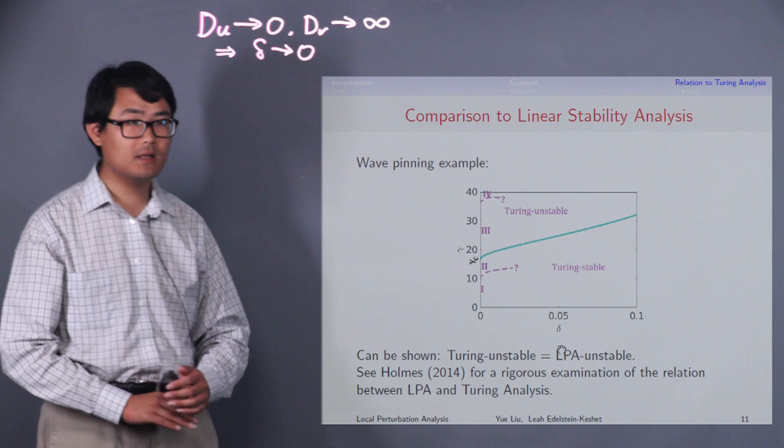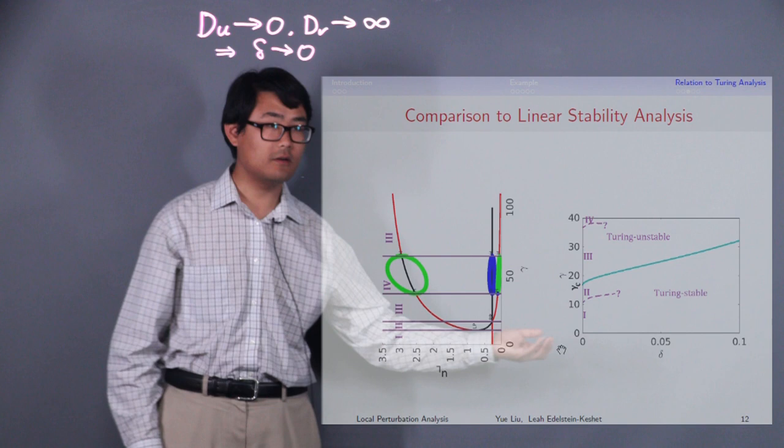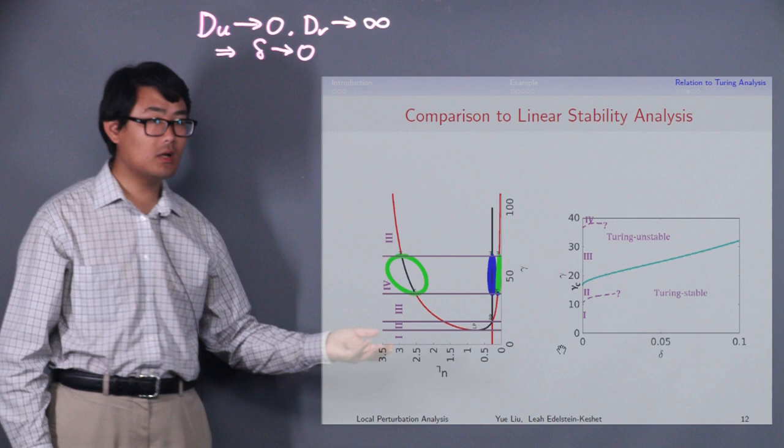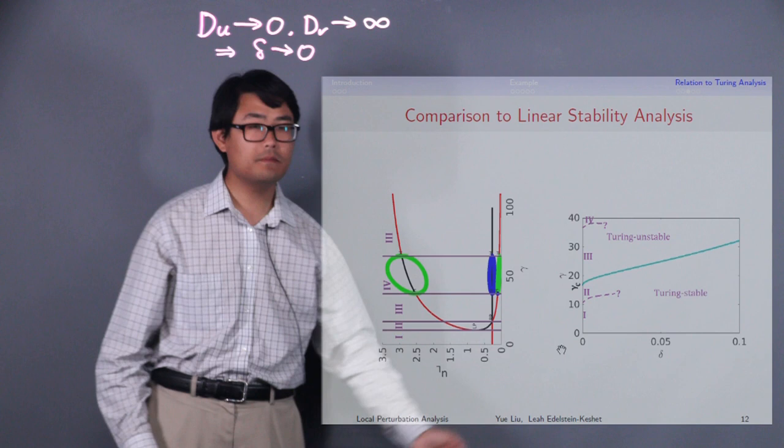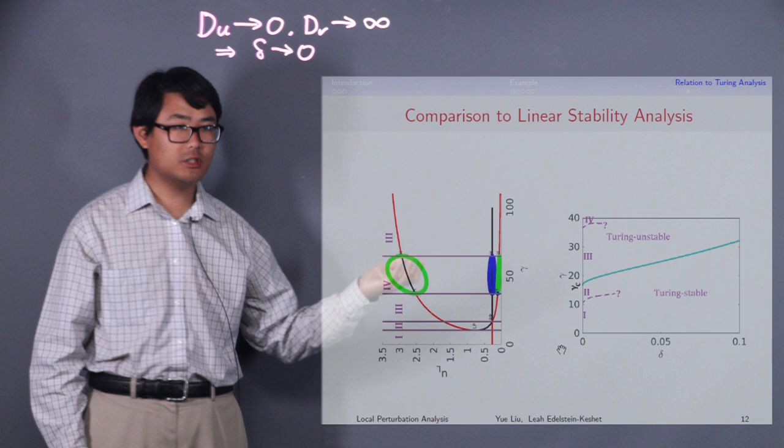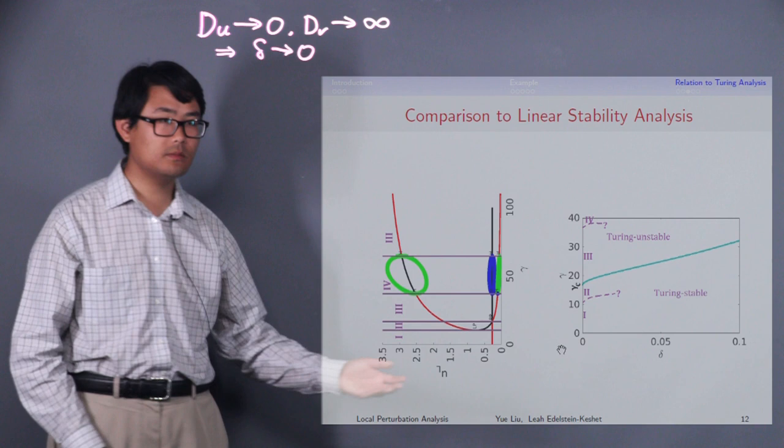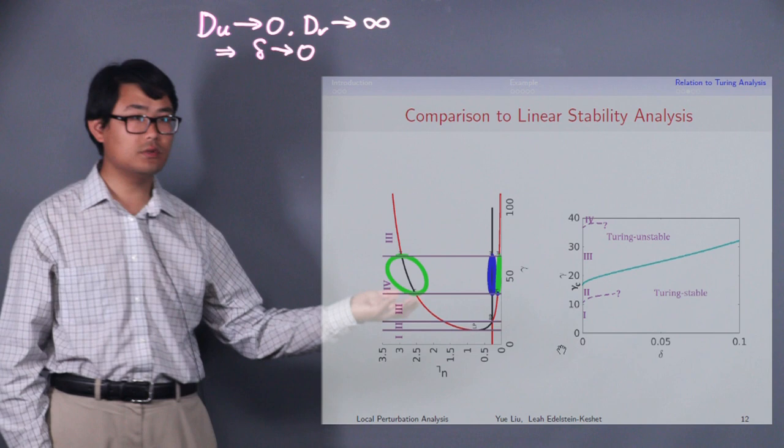Here we can observe that the LPA diagram earlier corresponds to the vertical axis of our new diagram. For example, the regime 1 here, we can label the regime boundary on our new diagram. It can be shown that LPA unstable regimes are the exact same thing as Turing unstable regimes. However, notice that Turing analysis cannot distinguish between regime 1 and 2. It also does not distinguish between regimes 3 and 4.